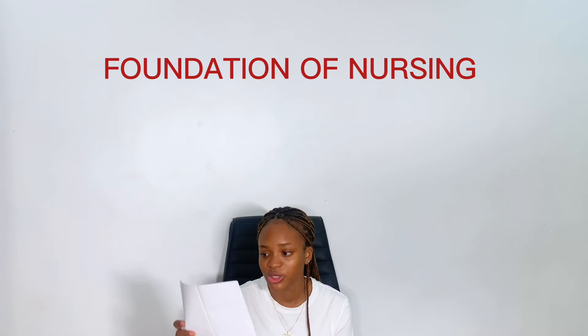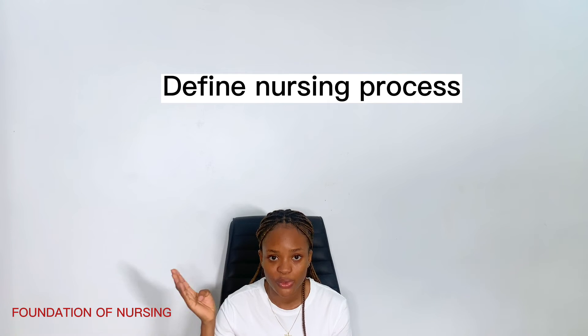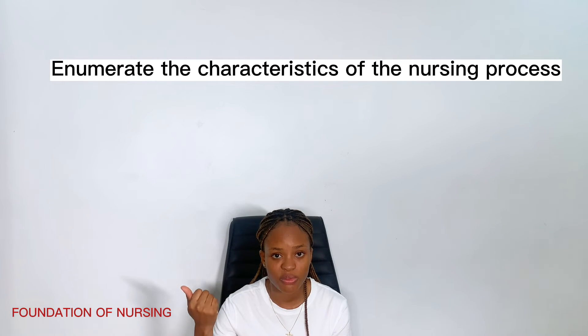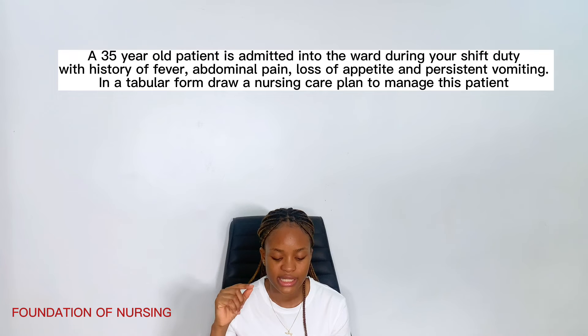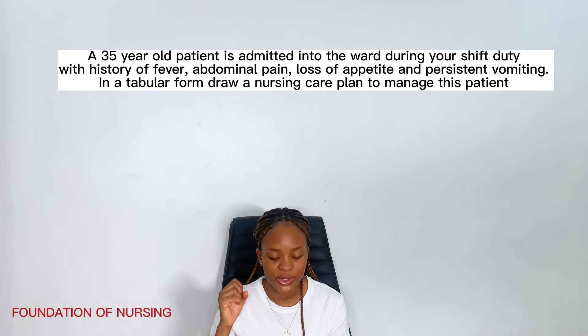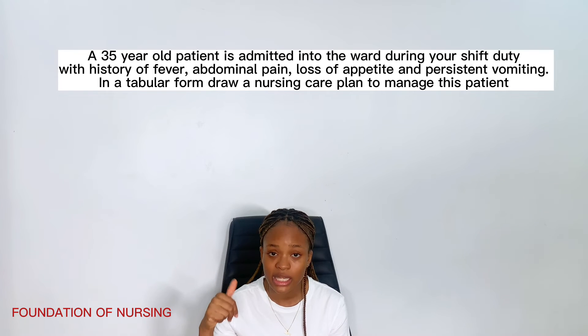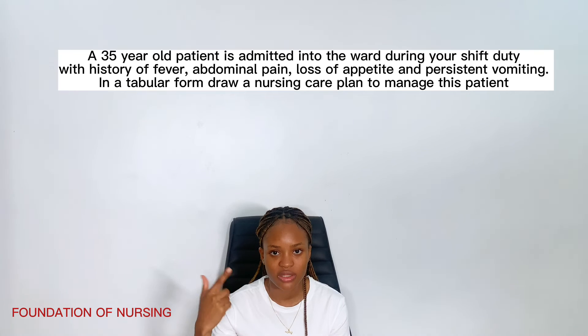The next one is foundation of nursing — a bit more complex, longer than the others. Four questions to answer. Question 1A: define nursing process. Question 1B: in a cyclical form, identify the steps or stages of the nursing process. C: enumerate the characteristics of the nursing process. D: a 35-year-old patient is admitted into the ward during your shift with issues of fever, abdominal pain, loss of appetite, and persistent vomiting — in a tabular form, draw a nursing care plan to manage this patient.